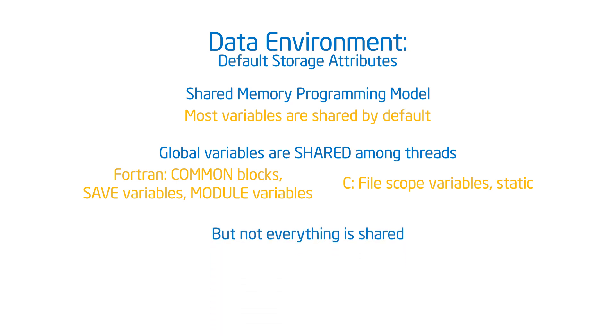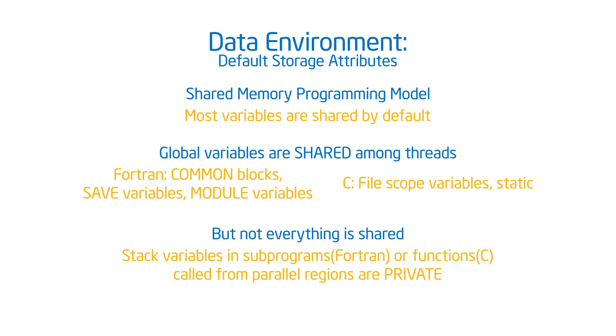But not everything is shared. If it's on the stack, it is private to a thread. When I have a parallel region and I declare my variables inside that parallel region, those go on the stack. If I have a function and inside the body of that function I declare variables, these are automatic variables — they're on the stack, they're private. Simple way to think about it: heap is shared, stack is private. If you know enough about how compilers work, you can keep the default straight.